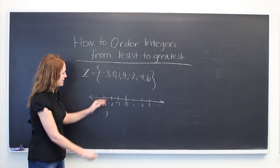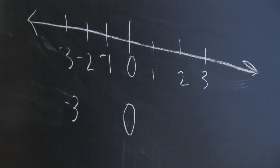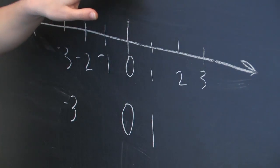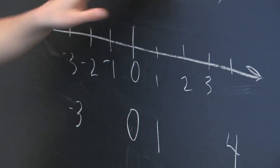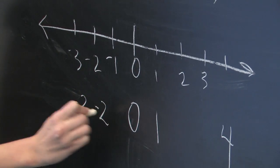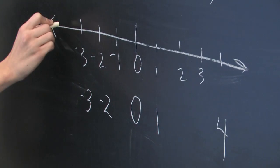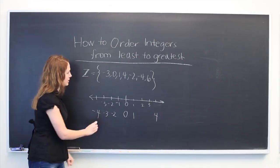Then we have a 0, a 1, a 4 which would be over here, minus 2, minus 4, and 6.